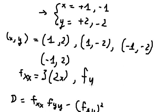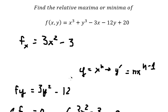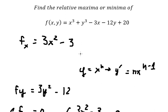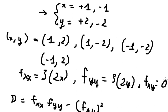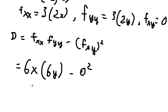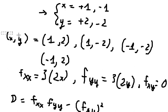Now we compute Fxx and Fyy. For Fxx we differentiate with respect to X, and for Fyy we differentiate with respect to Y — that term has no Y so you get zero. Putting everything together, we get D equals 36xy.